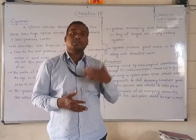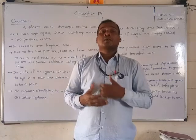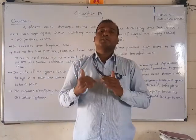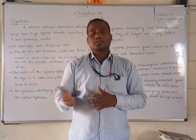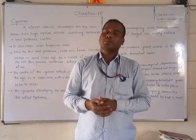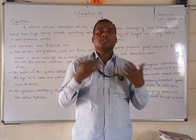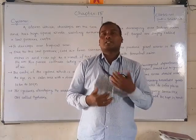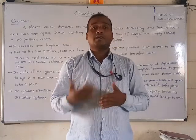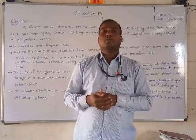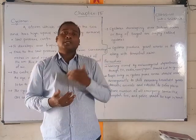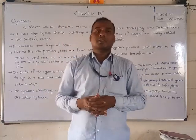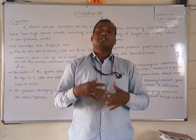If cyclones occur in the western Pacific Ocean, they are called typhoons. If they occur in the Indian Ocean, they are simply called cyclones. The radius of a cyclone is about 150 kilometers, and the wind speed can be above 100 kilometers per hour for severe cyclones, and around 65 to 70 kilometers per hour for normal cyclones.